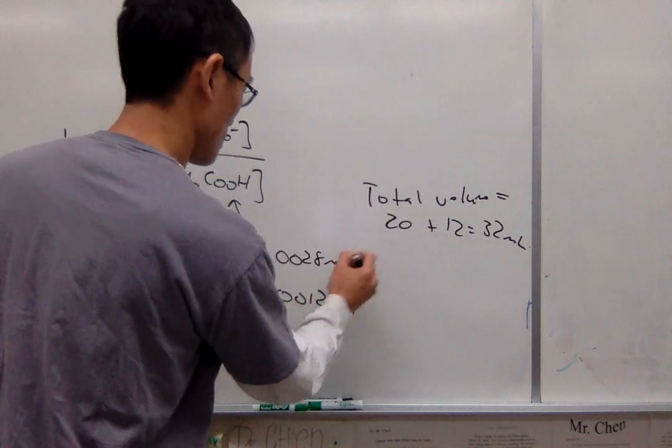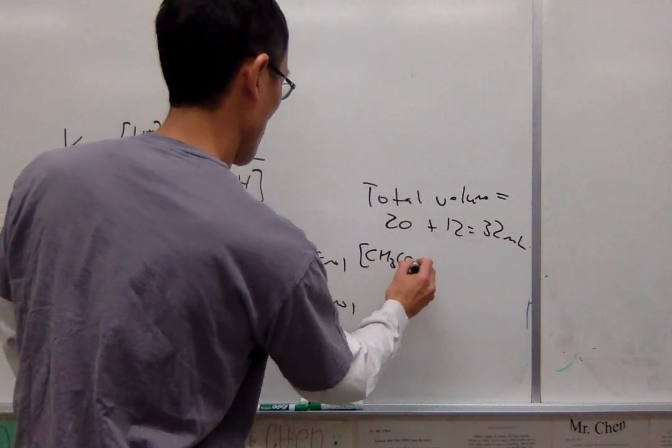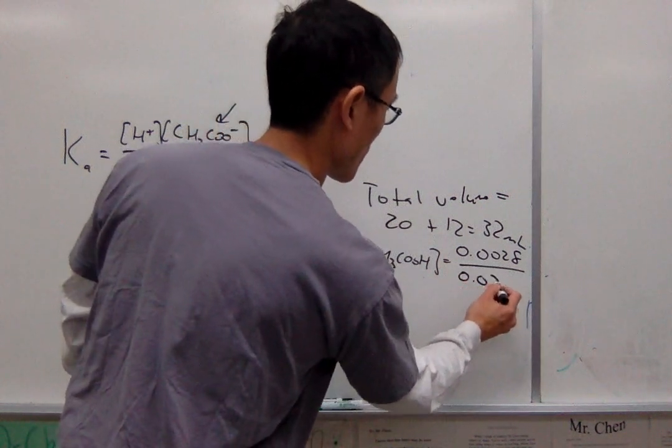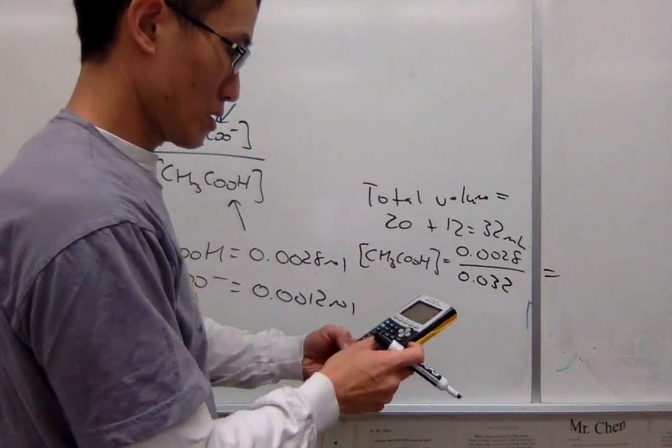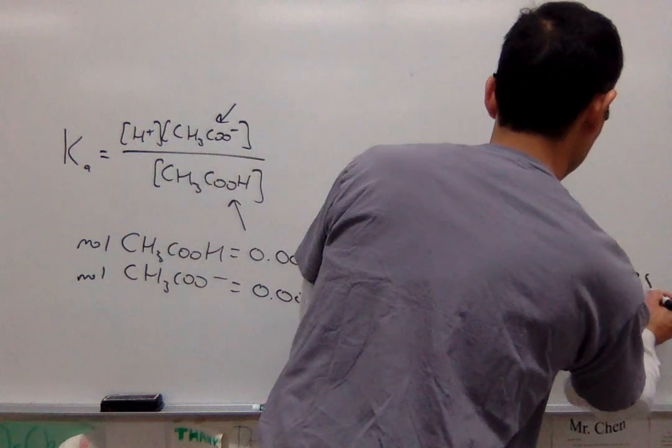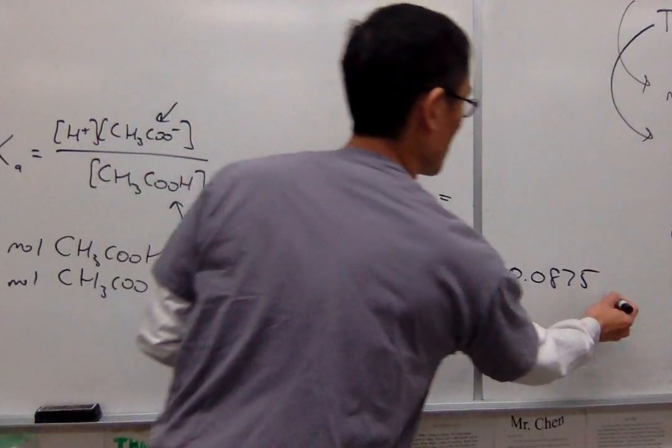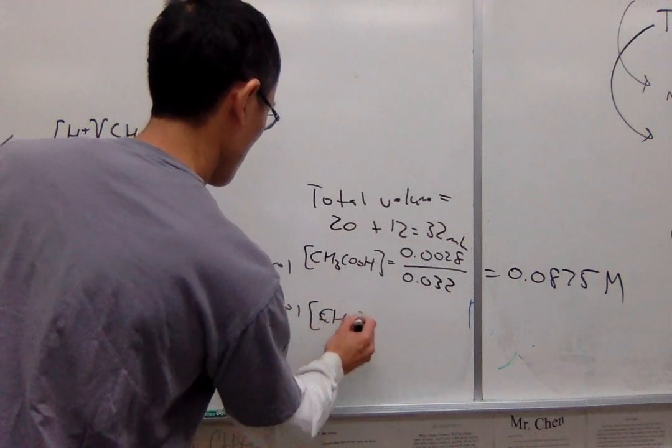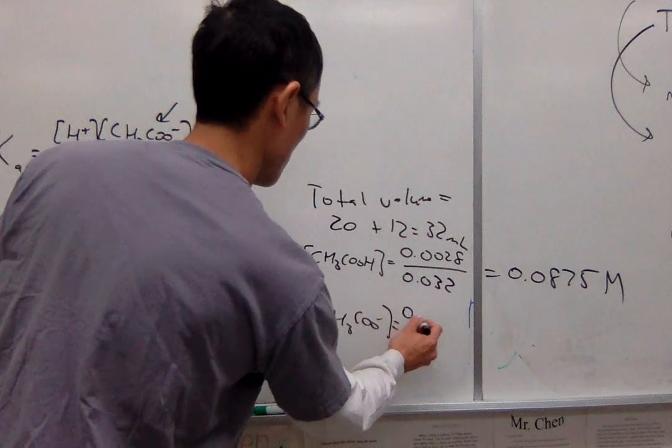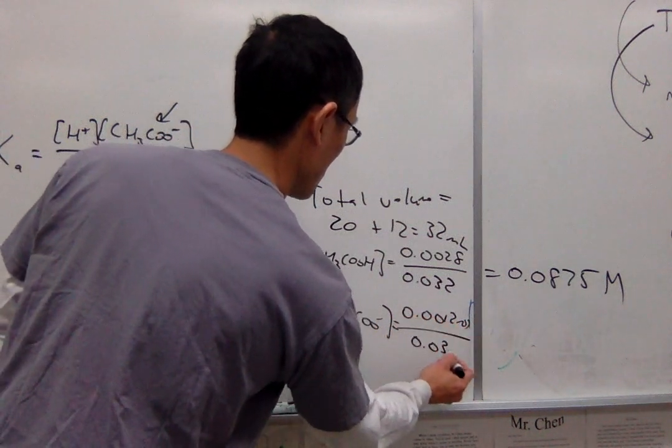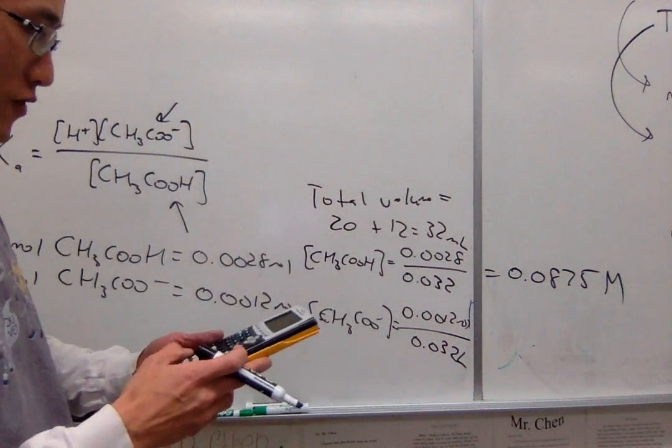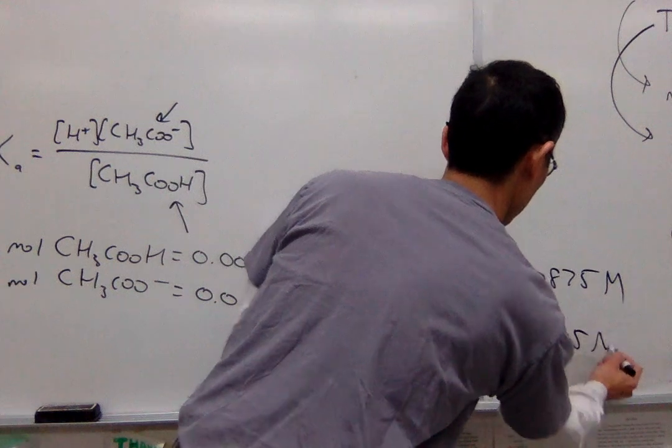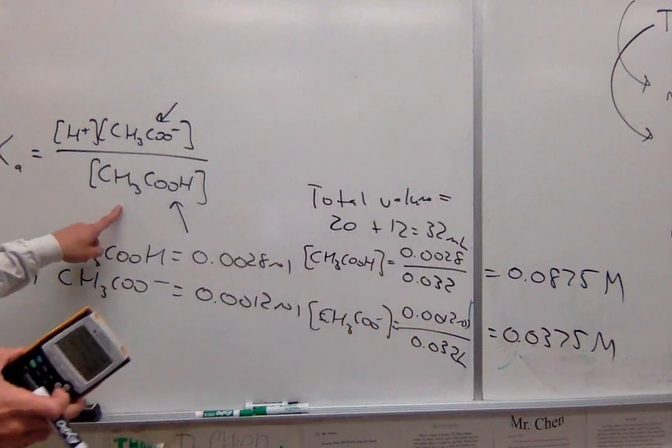So I'm going to go ahead and divide this out. So my molarity of the CH3COOH is going to be 0.0028 divided by that in liters, so 0.032. So that equals 0.0875. So that's my molarity. My CH3COO-, this thing here, is 0.0012 moles divided by 0.032 liters. Same volume, 0.0012, 0.032, that equals 0.0375 molar. I'm going to plug this back into here now.